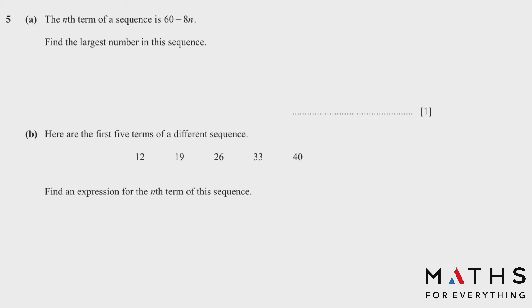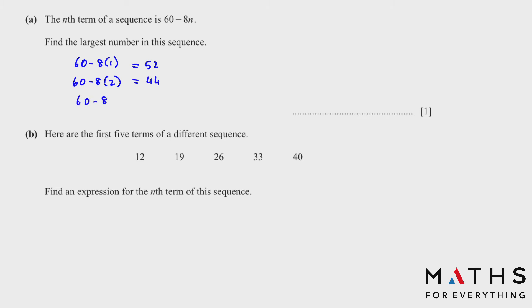Now this is a sequence question. If the nth term of a sequence is 60 minus 8n, find the largest number in this sequence. Replace n with 1: we get 52. When n is 2 we get 44. Replace with 3 and we get 36. As we go further into the series the number decreases, so the largest number is 52.